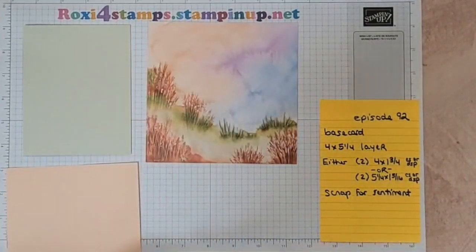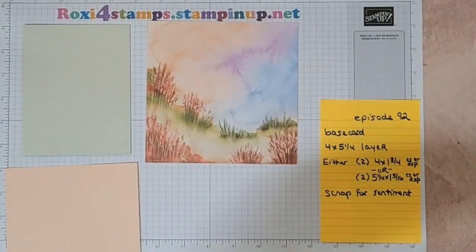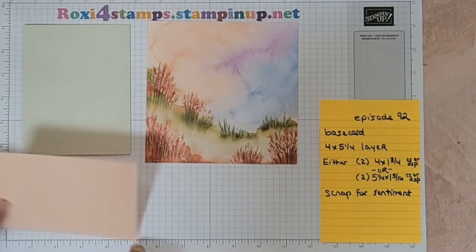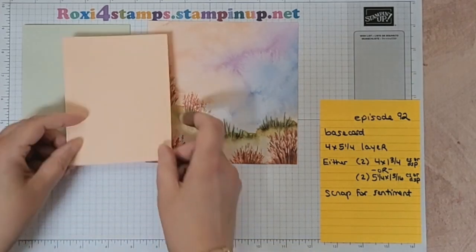So let's go ahead and use petal pink for the layer. That's going to be four by five and a fourth. Let's make sure it's four by five and a fourth. So there's five and a fourth and there's four. All right, so there's my layer.